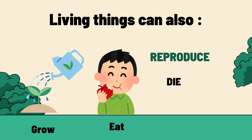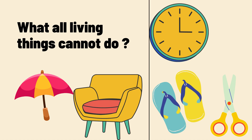Non-living things include tables, chairs, clocks, slippers, shoes, scissors, bottles, umbrellas, and the bed where we sleep. All of these are part of non-living things. So what are the things that non-living things cannot do?